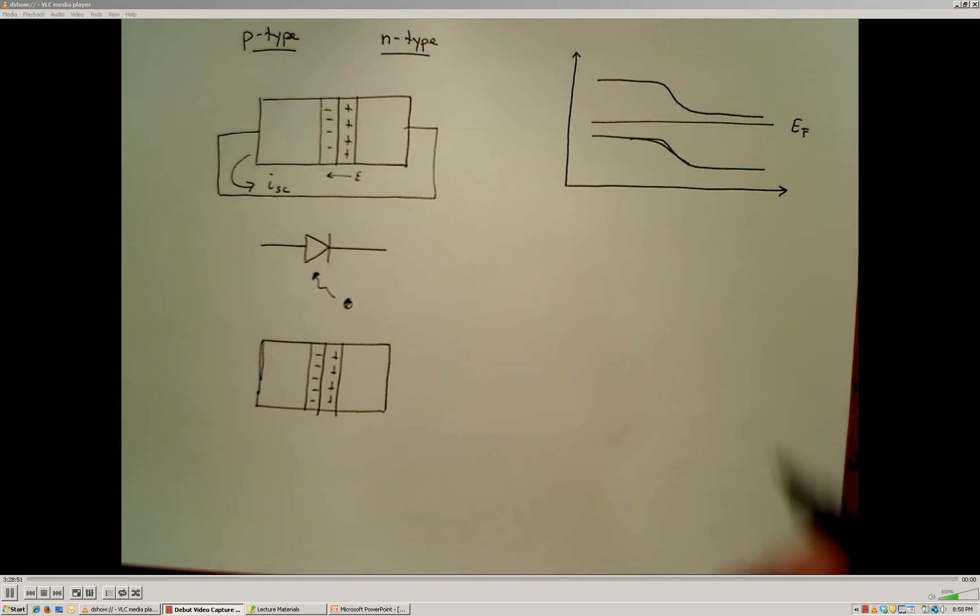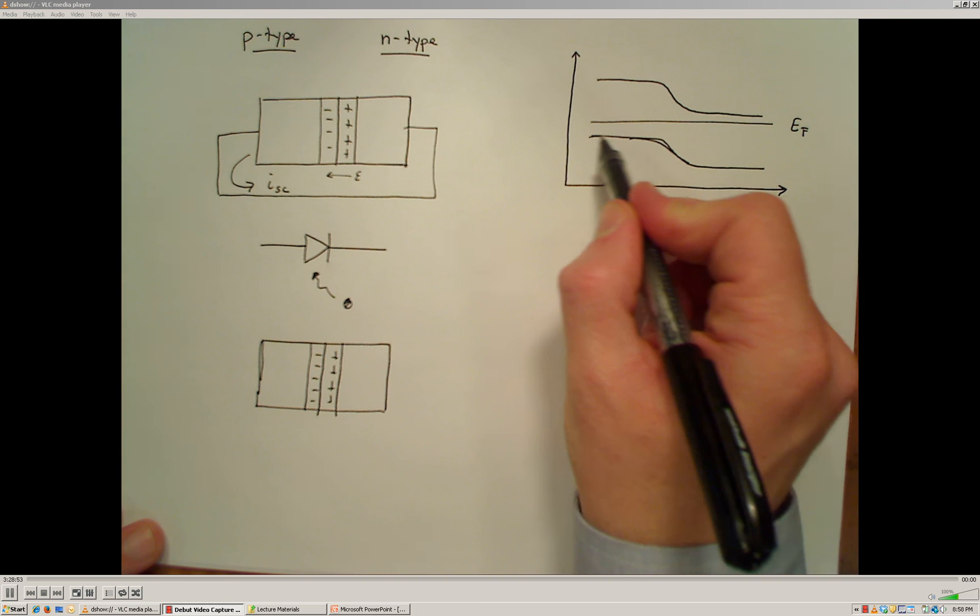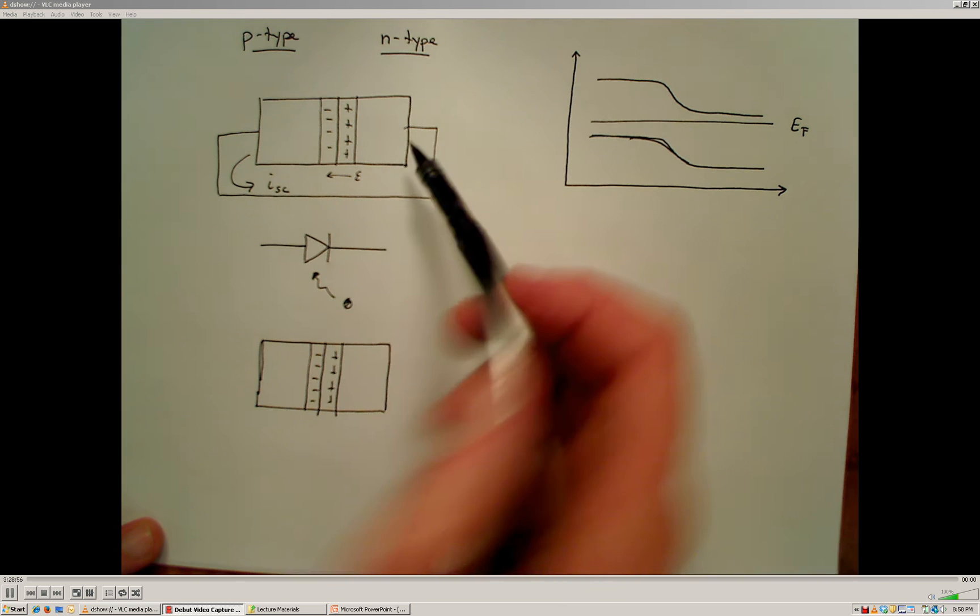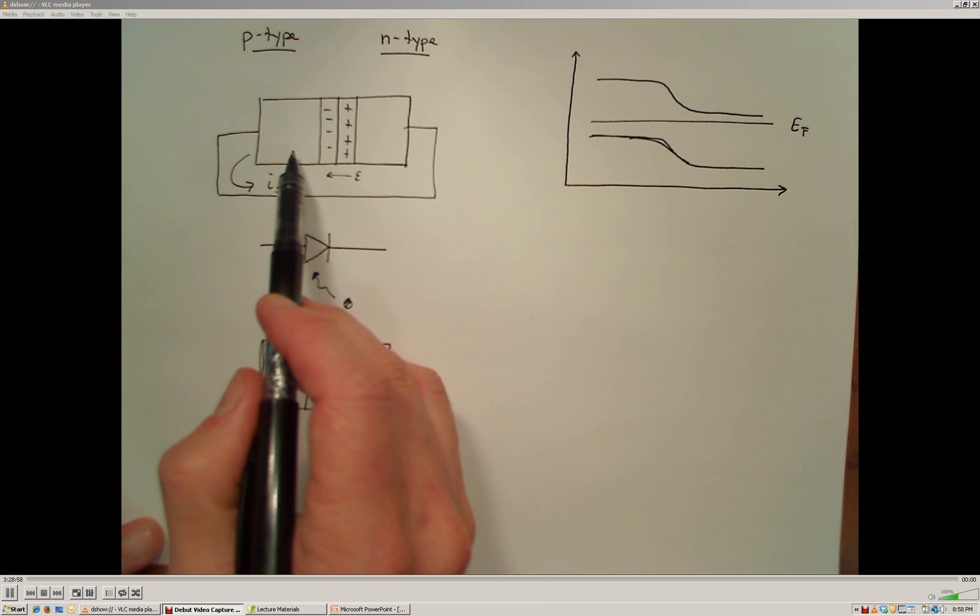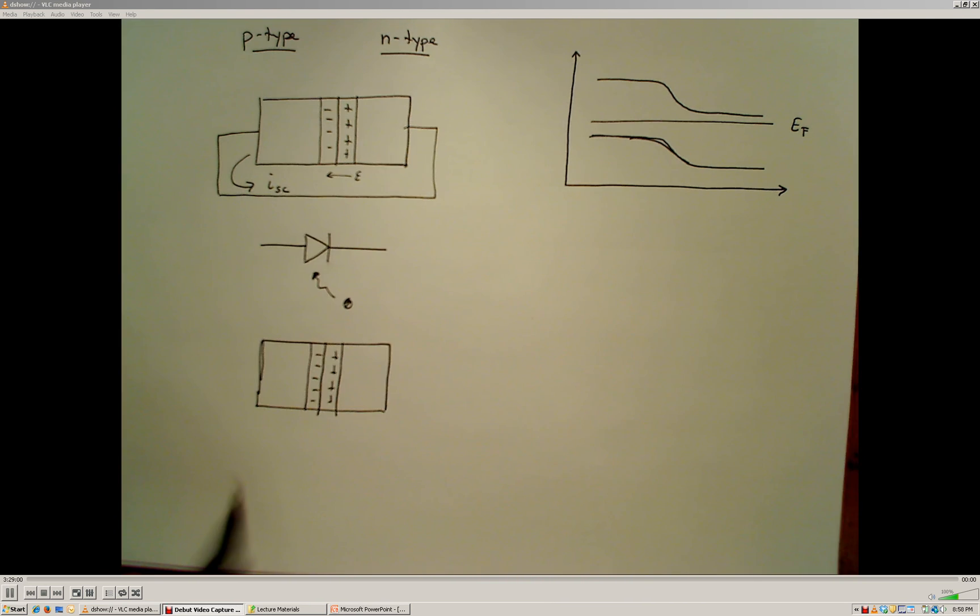And we can explain those using the energy diagrams, the band energy diagrams that we've discussed previously, and the concepts of how a P and N type material that's joined together behaves.